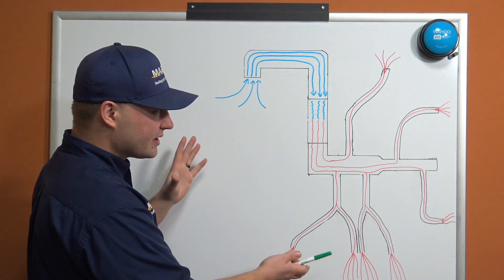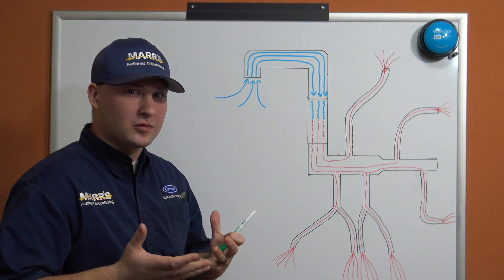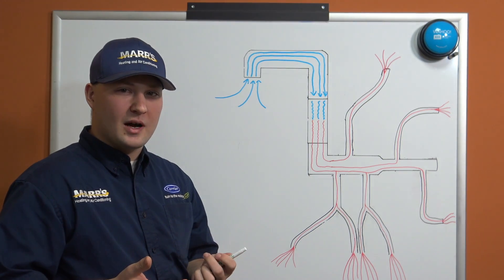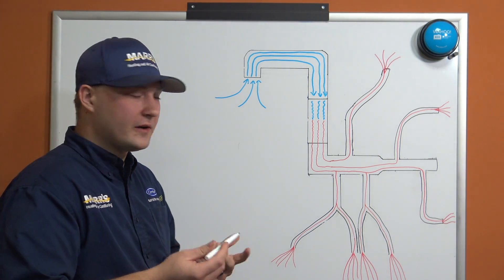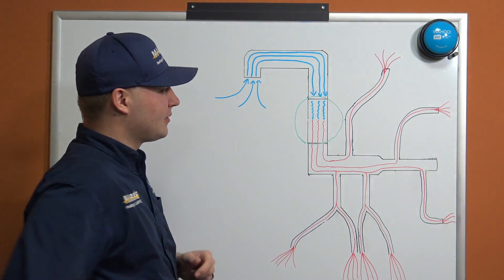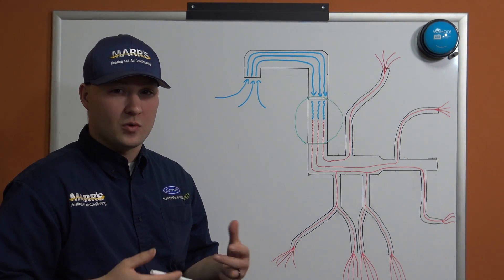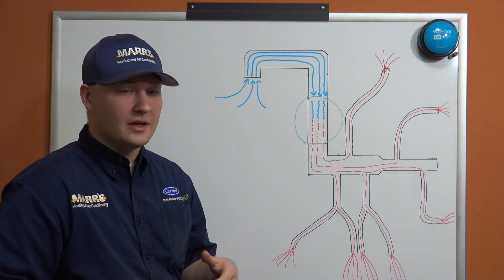When we talk about high static pressure, it's the same way we would talk about high blood pressure. The heart of the system is typically this air handler right here. And also, if we have an outdoor unit such as a heat pump or an air conditioner, that could also be considered the heart of the unit—the compressor.